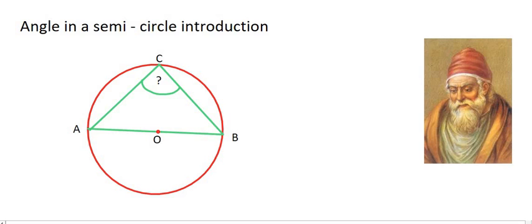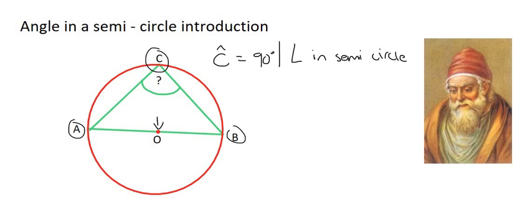So straight away here, we can see that A and B go through the center of the circle, so we can be sure that's a diameter. The angle that forms with a diameter is always 90 degrees. So we would say that angle C is 90 degrees, and the reason would be angle in semicircle.